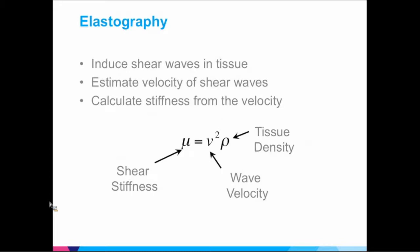In terms of basic mathematics, shear stiffness mu is measured as the product of tissue density and the square of the wave velocity. Tissue density is something you can easily infer in tissues, and wave velocity is something you can measure. Once you apply the excitation — the shear wave — you measure the wave velocity with MRI or ultrasound, and that gives you the shear stiffness.